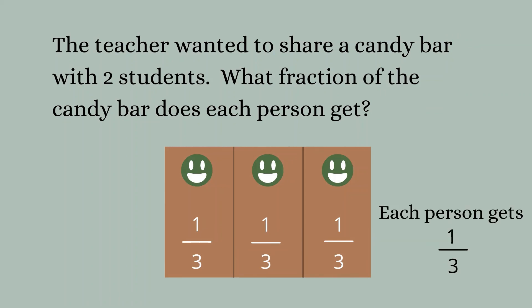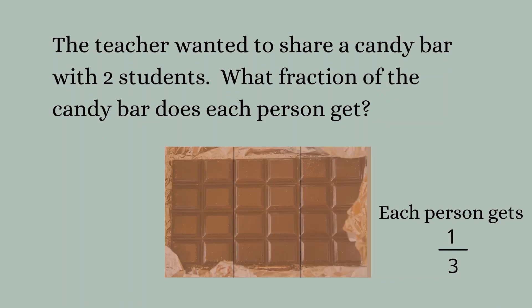What fraction of the candy bar does each person get? Each person gets one third. And if you look at the candy bar, we can fade back out, take away the brown rectangle, and see the candy bar pieces that were originally there — we can really see just what it looks like when three people share a candy bar: each person gets one third.